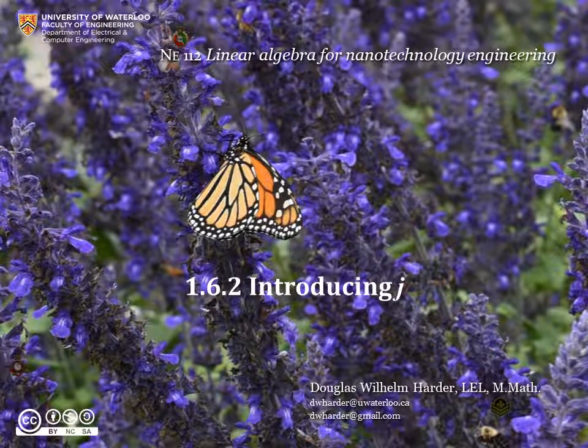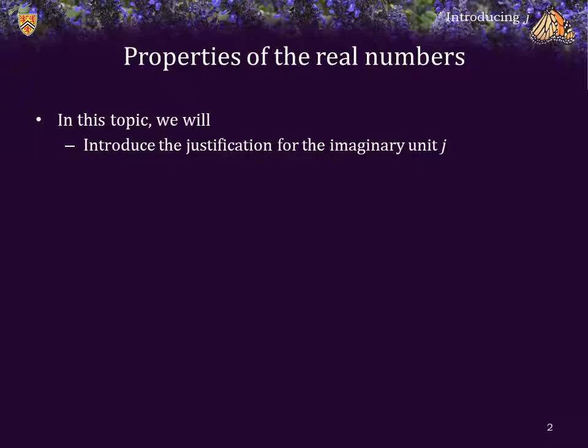Good day. For those of you who do not know me, my name is Douglas Harder, and in this topic, we're going to introduce the imaginary unit j. We will provide the justification for using this interesting object called the imaginary unit j, which is by definition the square root of negative 1.